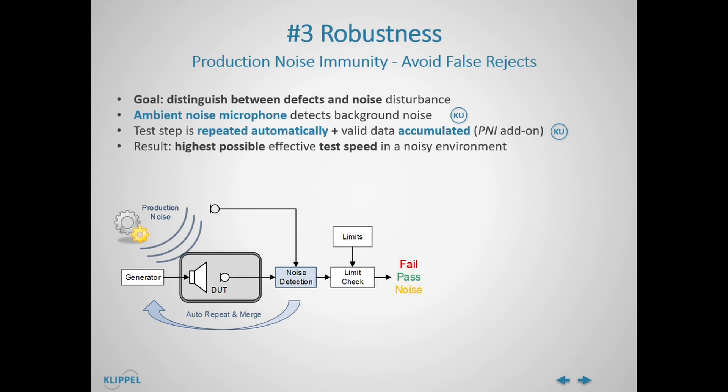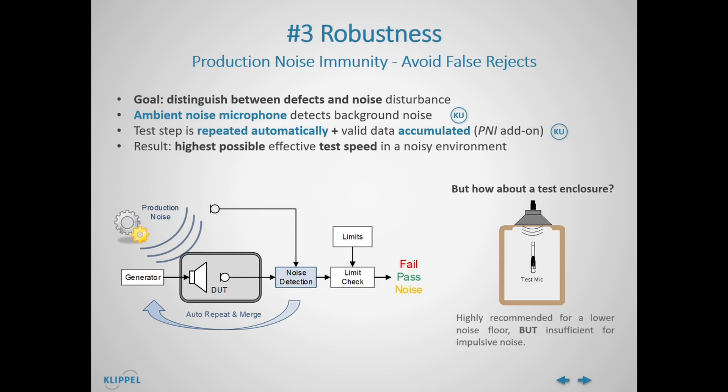You may wonder why this is necessary when a professional test enclosure is used to shield ambient noise. Well, of course, this is strongly recommended to provide reproducible and comparable acoustical conditions and a lower acoustical noise floor than in free air. But still, the effective attenuation is insufficient to avoid false rejects caused by impulsive noise, since reliable rub-and-buzz testing requires a significant dynamic range.